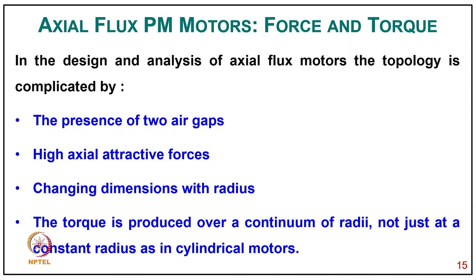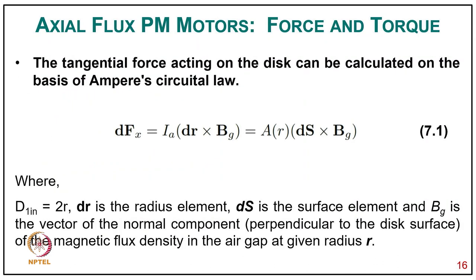Coming to axial flux motor force and torque calculation: in the design and analysis of axial flux motors, the topology is complicated by the presence of two air gaps, high axial attractive forces, and changing dimensions with radius. Torque is produced over a continuous range of radius, not just at a constant radius as in cylindrical motors. The tangential force acting on the disc can be calculated on the basis of Ampere's circuit law: dFx = ia × dr × Bg = Aa(r) × dS × Bg, where dl = 2r dr, dr is the radius element, dS is the surface element, and Bg is the normal component of magnetic flux density in the air gap at radius r.